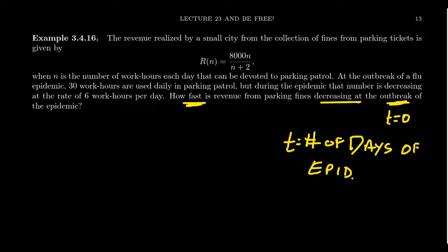If we're asking how fast is revenue decreasing at the start, we're asking about t equals zero. But wait, there's no t in our function. We have R(N) where N is the number of work hours. So can we somehow derive information about revenue with respect to time? This is the important thing to focus on in this problem.